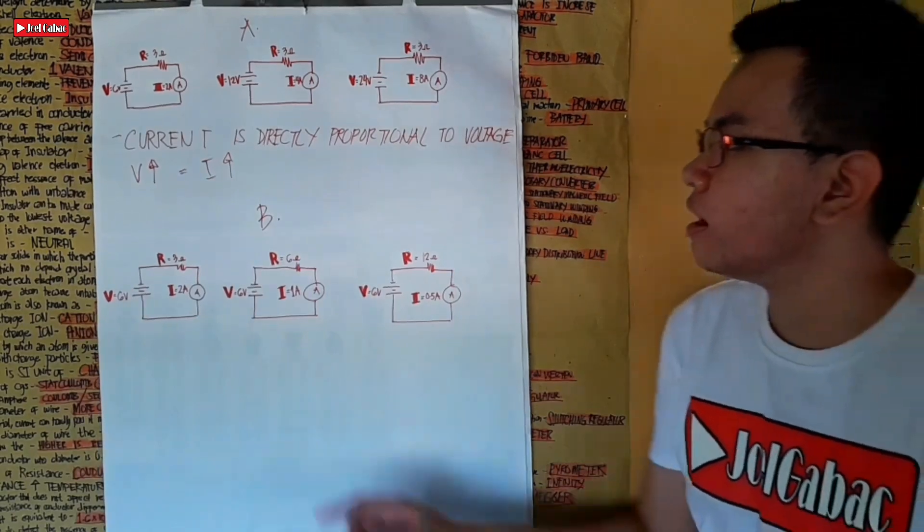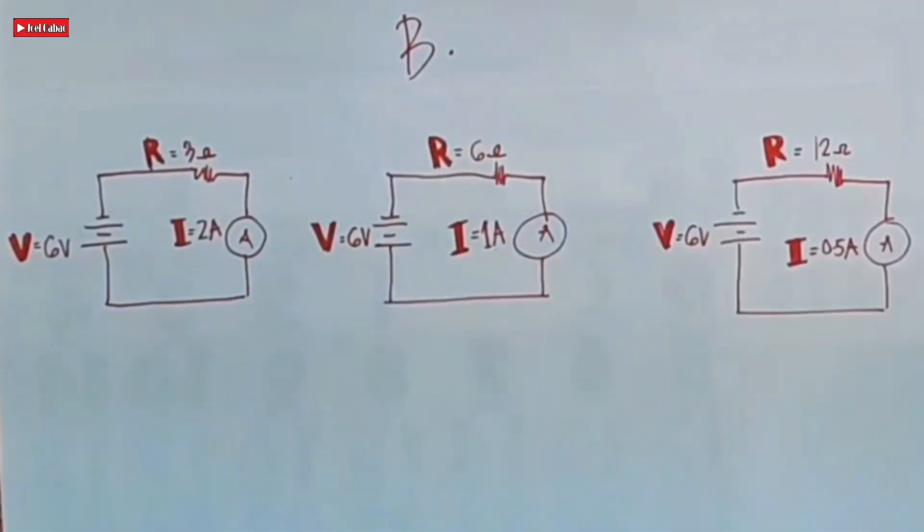Now in Figure B, what do you observe about this figure? As we can observe, the voltage is the same at 6 volts, but the current is decreasing. The first one is 2 amperes, second one is 1 ampere, and the third one is 0.5 ampere.